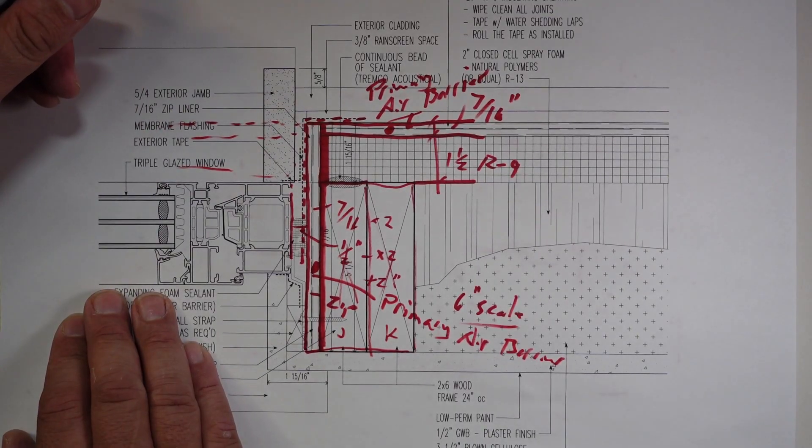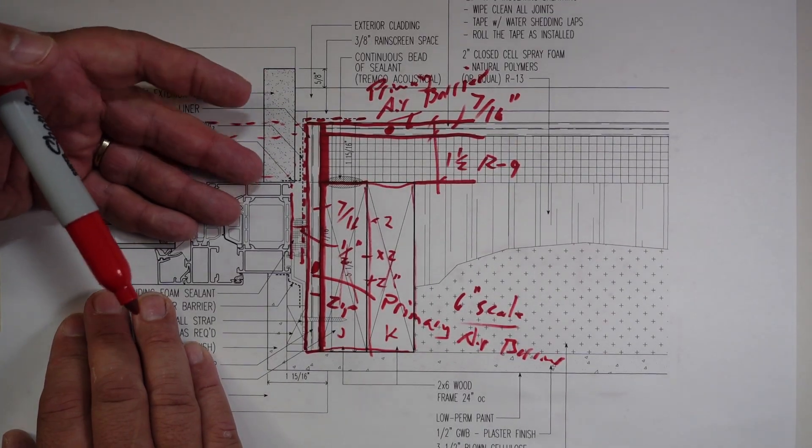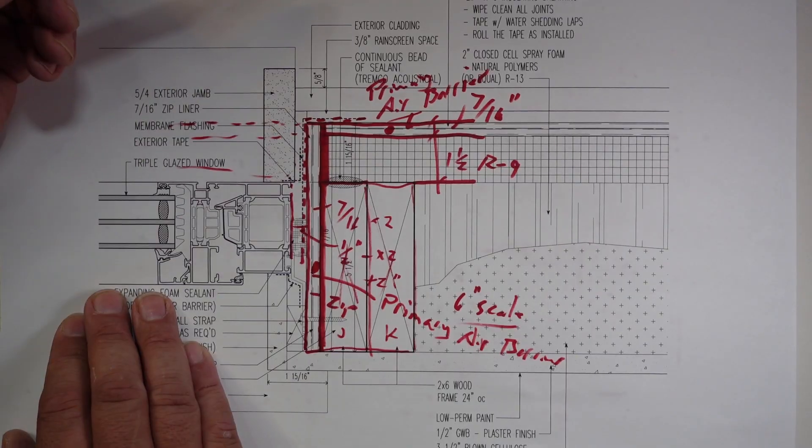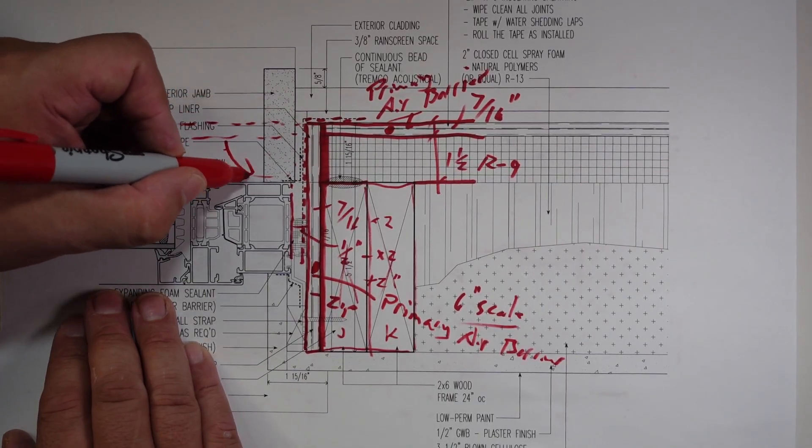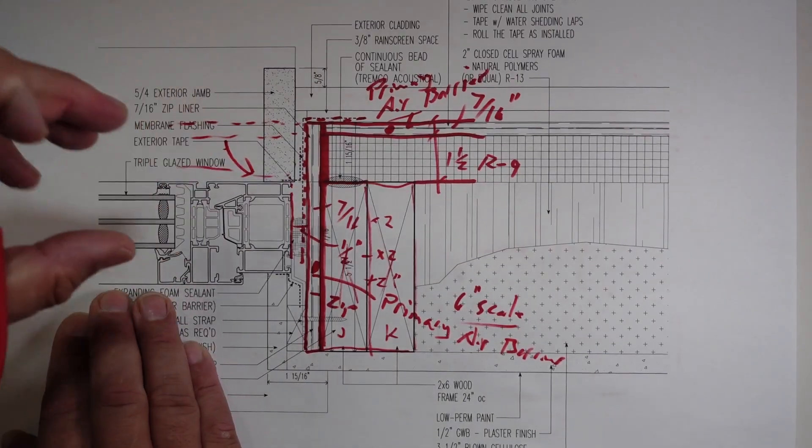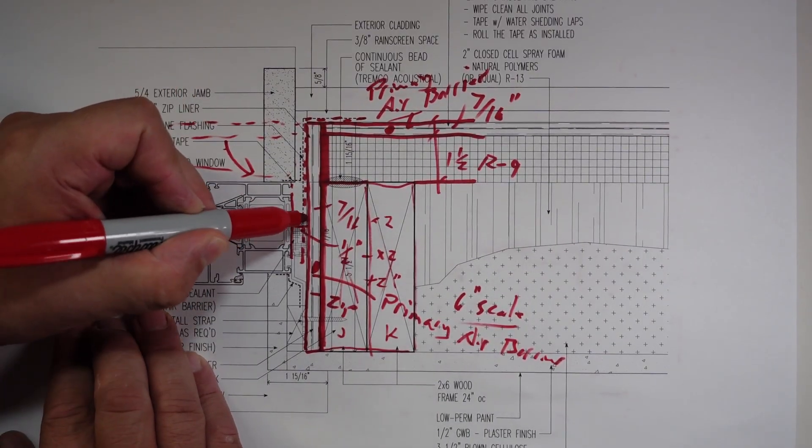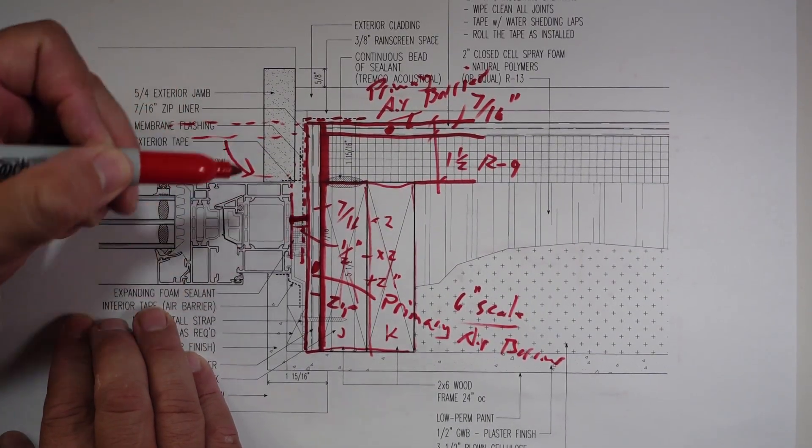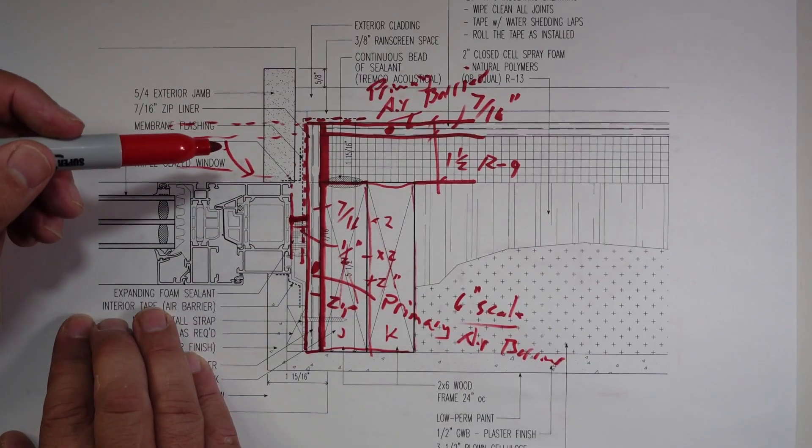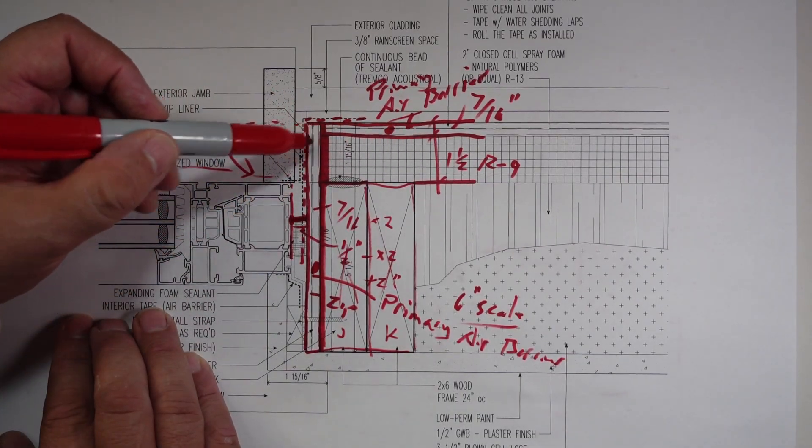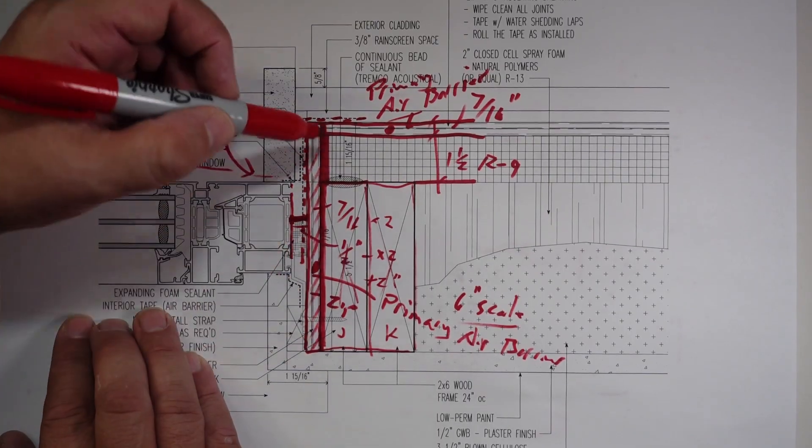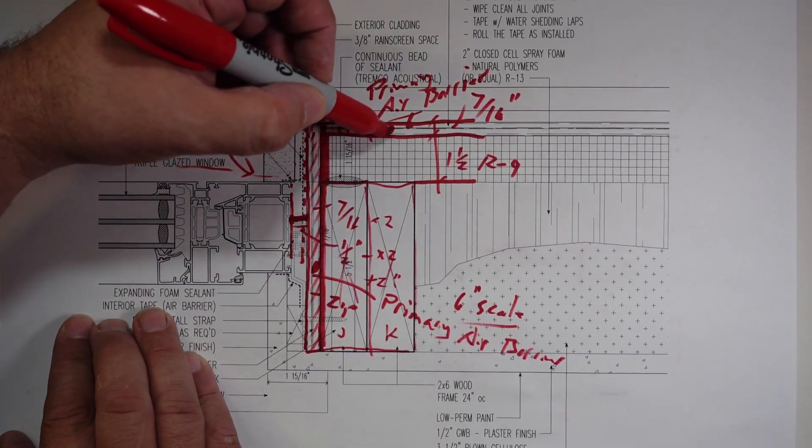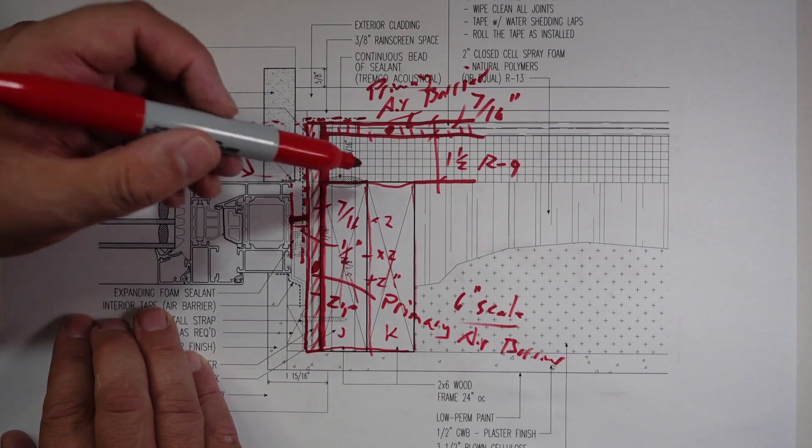So now my primary air barrier that's out there is also here on the inside. In the wall this 7/16 on the polyiso would extend all the way across, but because we chose to put a window in we cut it here. So basically when we cut it we want to fold that in so that when I put the window in I have some type of attachment here for air barrier continuity.